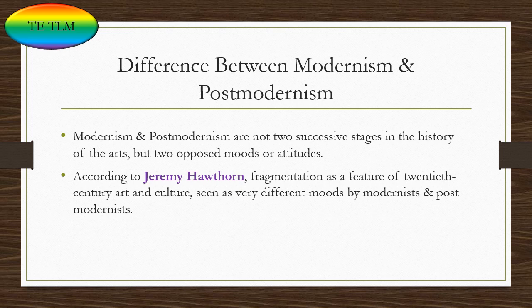Modernism and postmodernism are not two successive stages in the history of the arts but are two opposed modes or attitudes, according to Jeremy Hawthorne. Fragmentation as a feature of 20th century art is seen in very different moods: the modernist treats it with deep nostalgia for an earlier age when faith was full and authority intact, whereas for the postmodernist fragmentation is an exhilarating, liberating phenomenon, symptomatic of our escape from the claustrophobic embrace of fixed systems of belief.